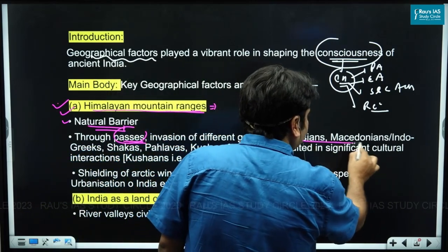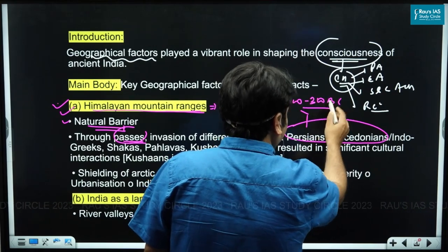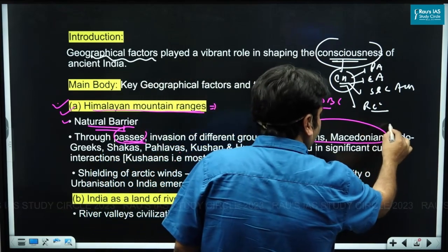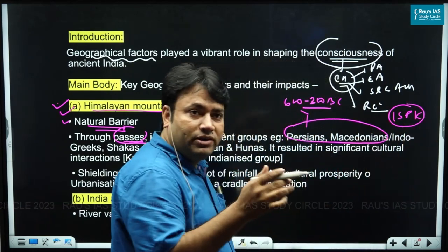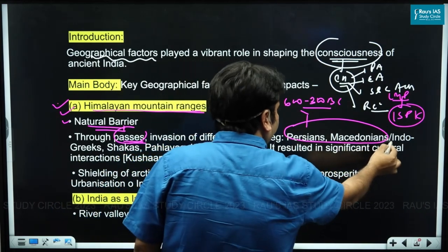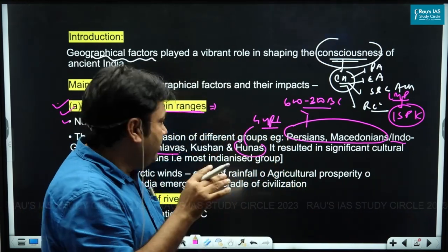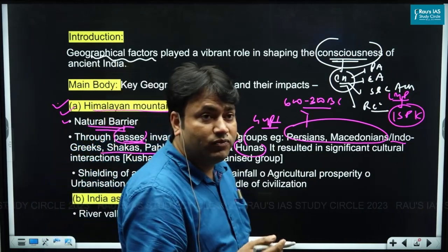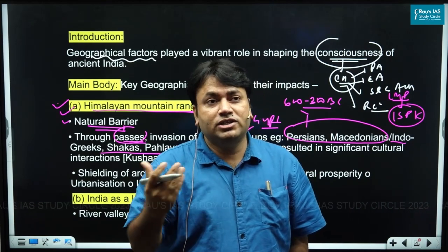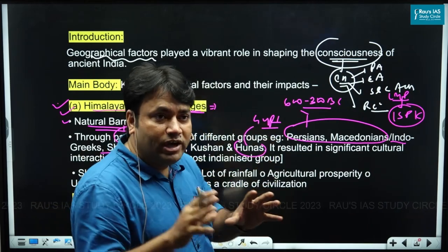Foreign groups such as Persians and Macedonians invaded India during the 600–300 BC period. Later, during the post-Mauryan period, Indo-Greeks, Shakas, Pahlavas, and Kushans invaded through these passes. The Hun invasion also took place during the Gupta period. As a result of these invasions, significant cultural interactions took place, which had a great impact on development across different spheres in ancient India.